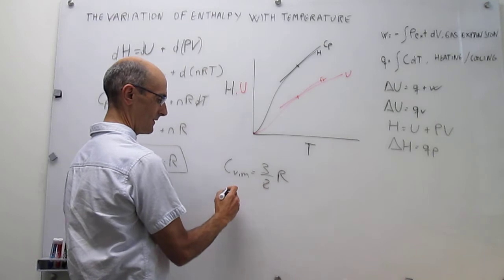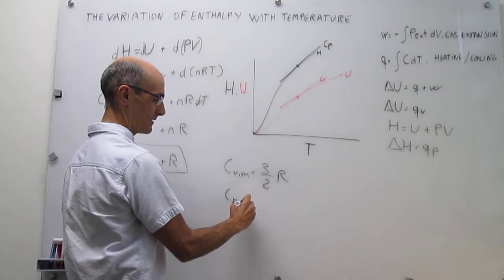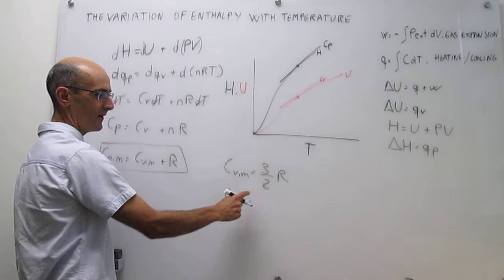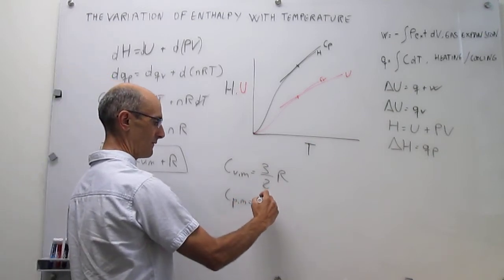And then cpm will be a value that is r larger than that, so if you add r to this, this is simply going to be five halves r.